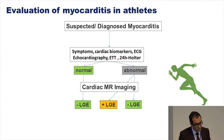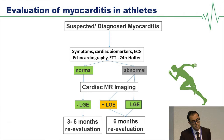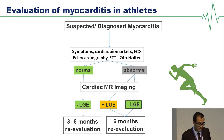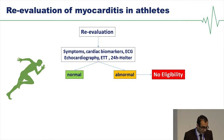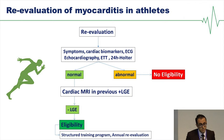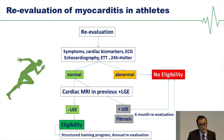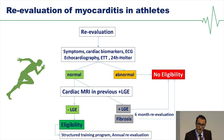This should be followed by MRI. The presence or absence of gadolinium enhancement determines management. If there is no gadolinium, the patient can be re-evaluated three to six months later, after the initial acute phase has subsided. However, if there is gadolinium enhancement, a six-month re-evaluation is advised with repeat initial tests. If gadolinium has regressed or improved, the athlete may be deemed eligible to return to sport according to a tailored exercise regime. If gadolinium persists, another six-month re-evaluation is recommended, as there is limited evidence regarding outcomes in athletes with persistent enhancement.